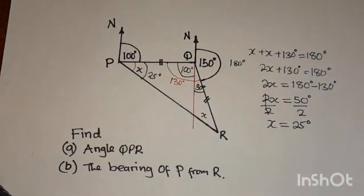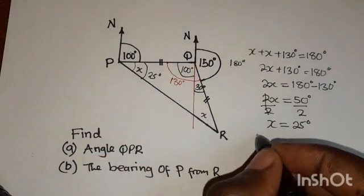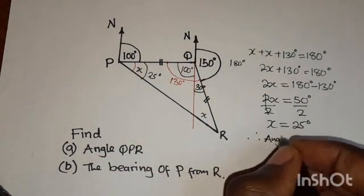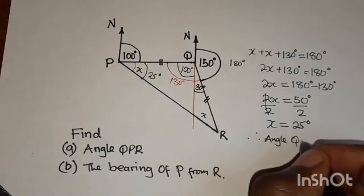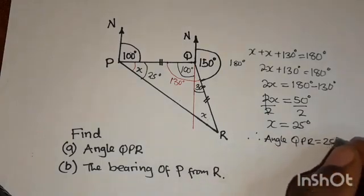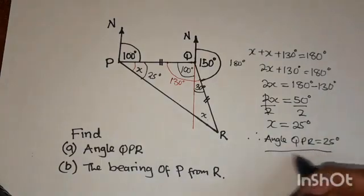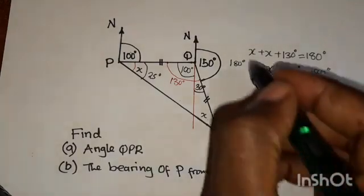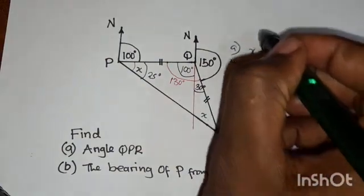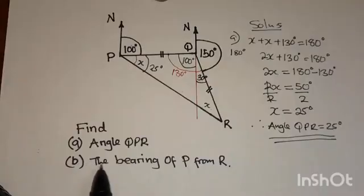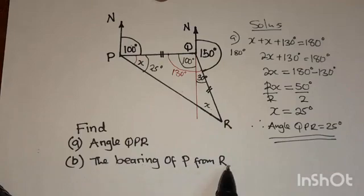We can now conclude: therefore, angle QPR is equal to 25 degrees. That is the Part A solution. For Part B, they are saying: calculate the bearing of P from R.